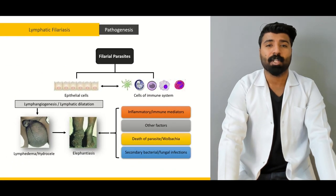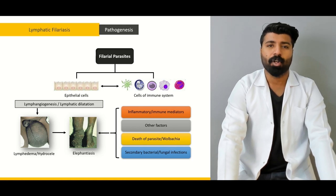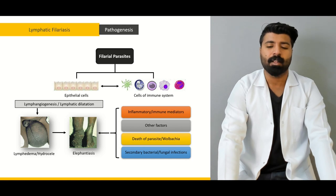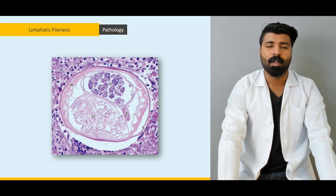Next, we're going to talk about the pathogenesis of lymphatic filariasis — at what levels or which systems of the human body are going to be affected the most. We're going to talk about its effect on epithelial cells, its effect on immune cells, and how they are correlated and how they lead to the levels of lymphedema, hydrocele, and elephantiasis. Next, we're going to talk about a histopathological slide which shows the involvement of the spermatic cord by this microfilaria, and we're going to discuss in detail how they reach up to this level.